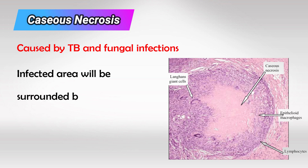So if we cut it open, we will see a thick wall made of macrophages and protective cells, and the inner material is made of dead cells, a lot of TB or other infective organisms, and a lot of debris.